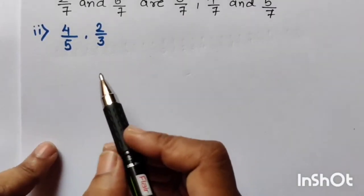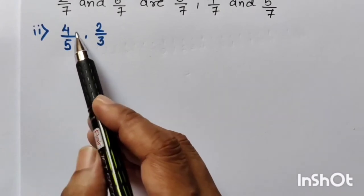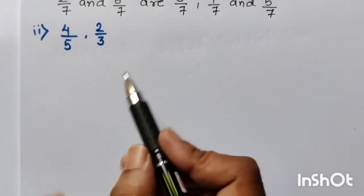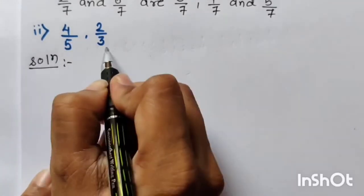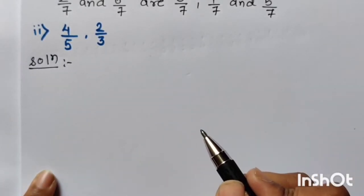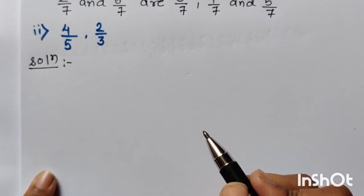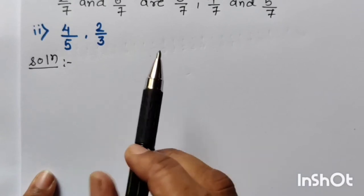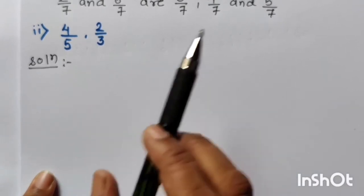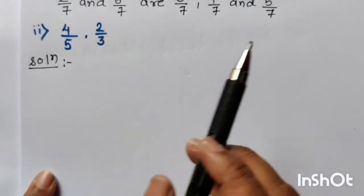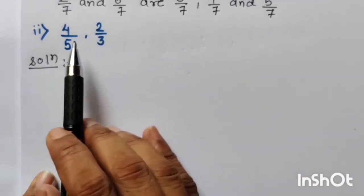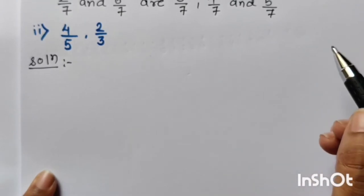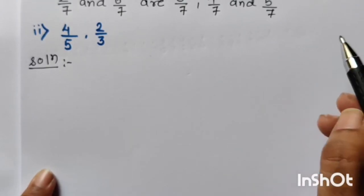Now see the second sum. The two rational numbers are 4 upon 5 and 2 upon 3. Here we can observe that the denominators are not common — they are different. When the denominators are different, we have to first equalize the denominator. We have to first make the denominators equal, and only after that can we write the numbers which lie between these two rational numbers.